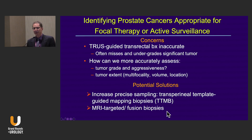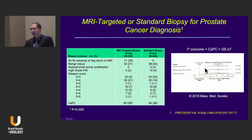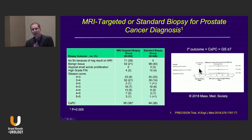The other thing we could do is perform targeted fusion biopsies. This was also done prospectively in the PRECISION trial, looking at two groups: the MRI-targeted biopsy group versus the standard biopsy group. In every way you looked at the performance of fusion-guided biopsies, it outperformed systematic biopsies — showing higher Gleason grades overall with the MRI-targeted group and a higher rate of picking up clinically significant cancer.